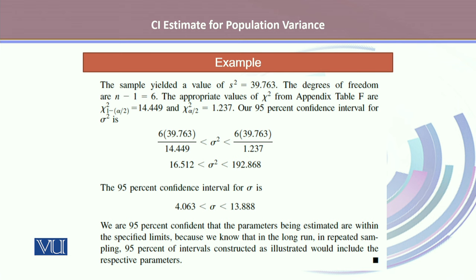The confidence interval for sigma squared, that is the population variance, is 16.512 as the lower confidence limit and 192.868 as the upper confidence limit.